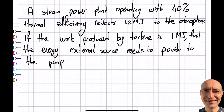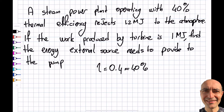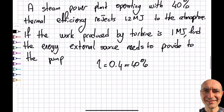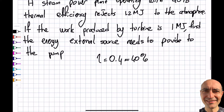Let me solve this question covering the steam power plant. A steam power plant operates with 40% thermal efficiency — so efficiency η = 0.4. It rejects 1.2 megajoules to the atmosphere, and the work produced by the turbine is 1 megajoule. We need to find the energy an external source needs to provide to the pump component of the steam power plant.